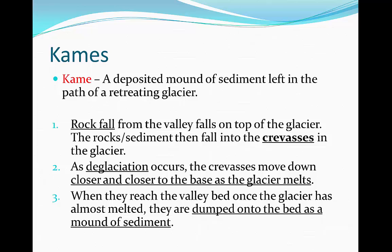These are the formation of kames. A kame is a deposited mound of sediment left in the path of a retreating glacier. Rock falls onto the valley on top of the glacier. The rocks and sediment fall into crevasses located on top of the glacier. Crevasses are cracks in the glacier formed from ice deformation and deformational flow, which is a type of glacier flow covered earlier in the course.